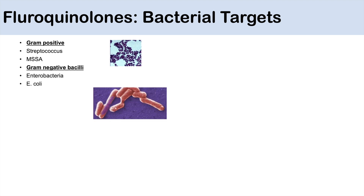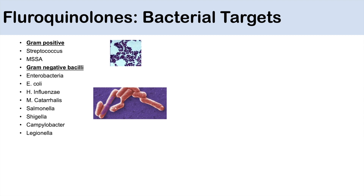Gram-negative rods also include Haemophilus influenzae, Moraxella catarrhalis, Salmonella, Shigella, and Campylobacter. Salmonella, Shigella, and Campylobacter are all examples of GI infections.